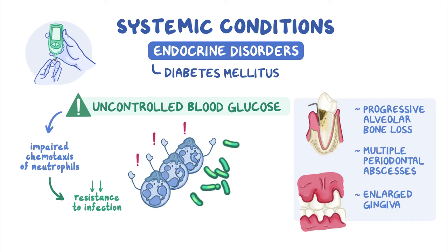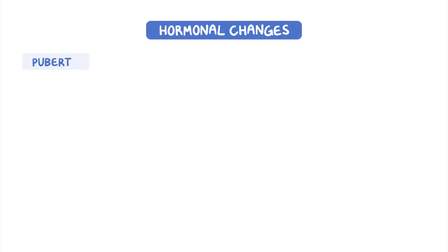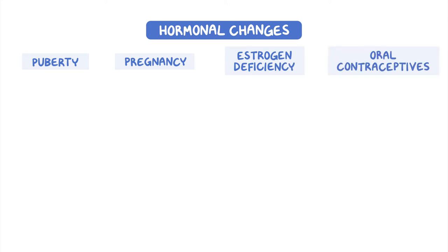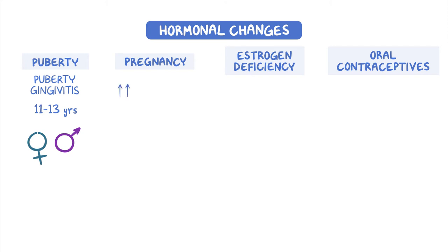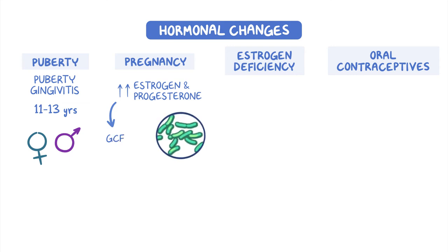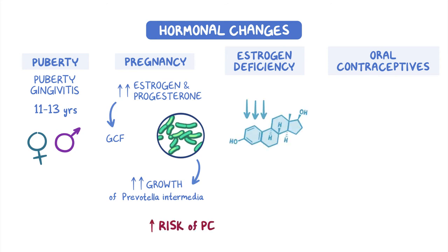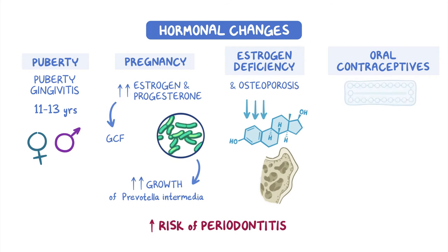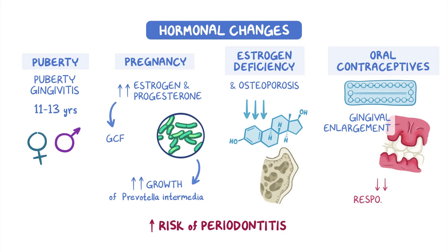Another possible risk factor is obesity. Conditions associated with hormonal changes include puberty, pregnancy, estrogen deficiency, and oral contraceptives. Puberty gingivitis is common in individuals between 11 and 13 years of age and can affect both males and females. During pregnancy, increased concentrations of estrogen and progesterone in the gingival crevicular fluid can act as a nutritive substitute that favors the growth of Prevotella intermedia, which is associated with periodontal disease. Low levels of estrogen are also associated with increased risk of periodontitis, common in individuals with estrogen deficiency and osteoporosis. Oral contraceptives can cause gingival enlargement and decrease host response to dental plaque.